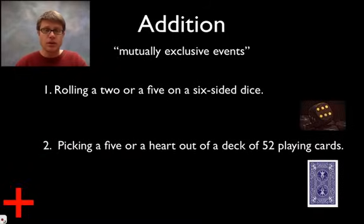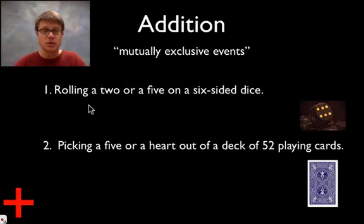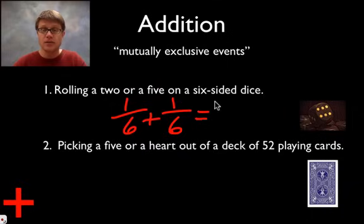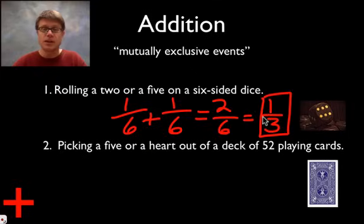What are the odds of rolling a 2 or a 5 on a 6-sided die? The odds of rolling a 2 are 1 in 6; the odds of rolling a 5 are also 1 in 6. We simply add those together: that is 2 in 6, or a 1 in 3 probability of getting a 2 or a 5.